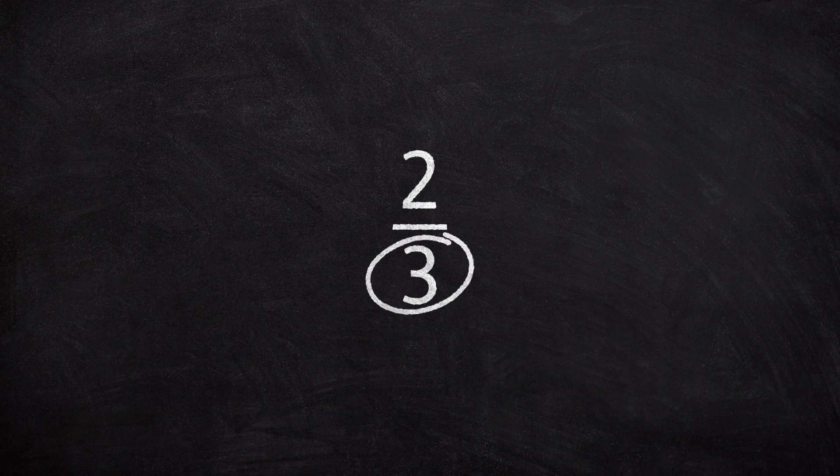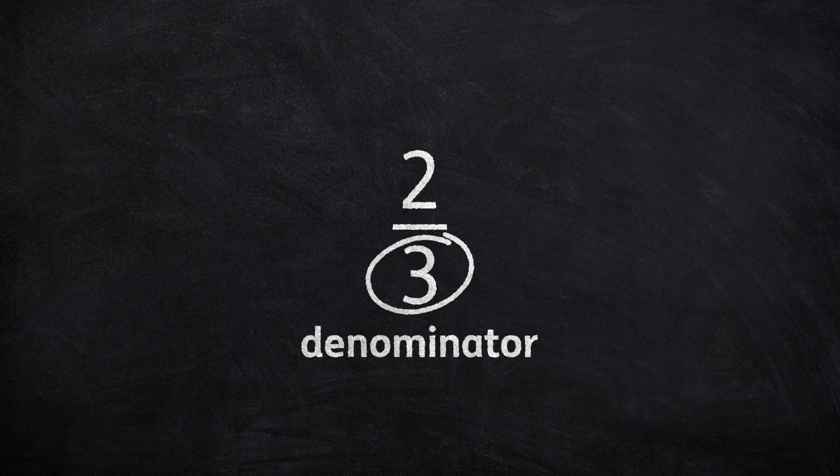The bottom number of a fraction is called the denominator. The denominator tells us how many equal parts a quantity or shape has been divided into.